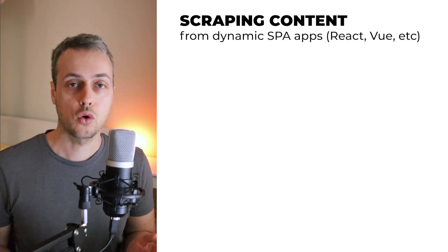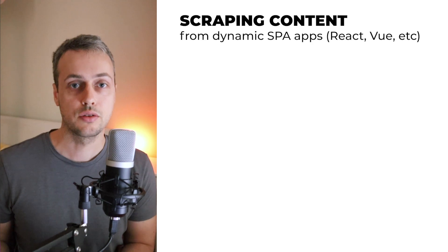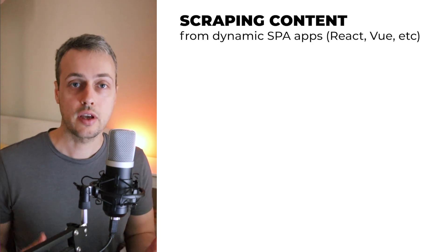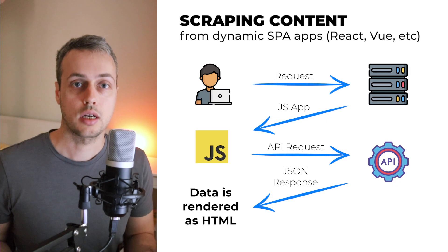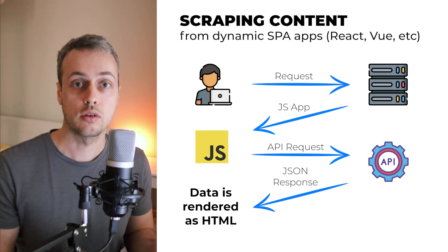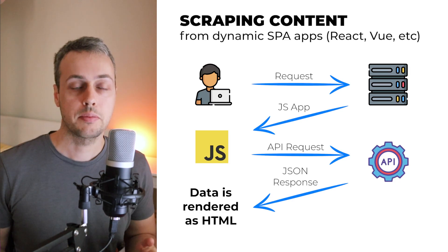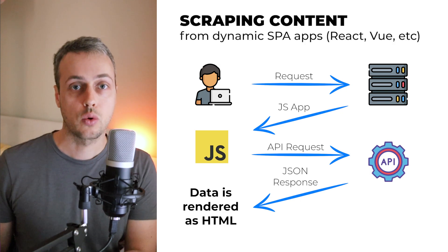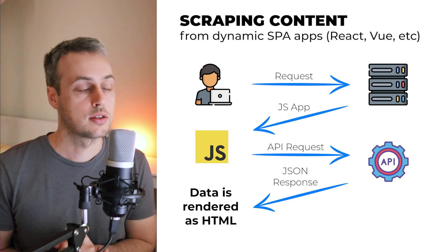In this video, we're going to learn how to scrape content from a web page where some of the data is dynamically loaded by JavaScript. This is very common nowadays when a lot of websites are single page applications, such as a React or Vue.js application. These apps perform an initial page load and then send further requests to get other content from the backends.